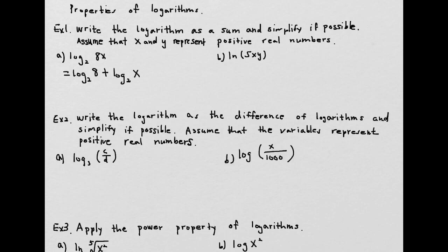Let's see if there's anything else we can do. We can rewrite 8 as 2 cubed. And we know that if we have the same base — small base and larger base — the exponent itself will be the solution. So we can simplify it into 3. And log₂(x) we cannot reduce any further, so that must be it.